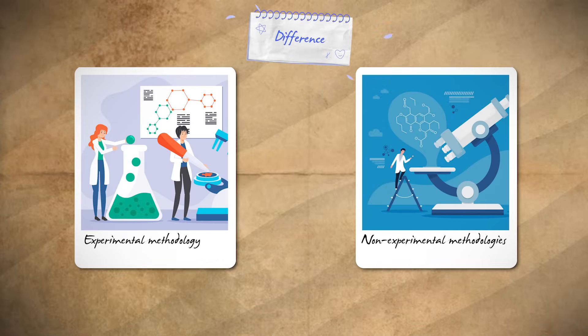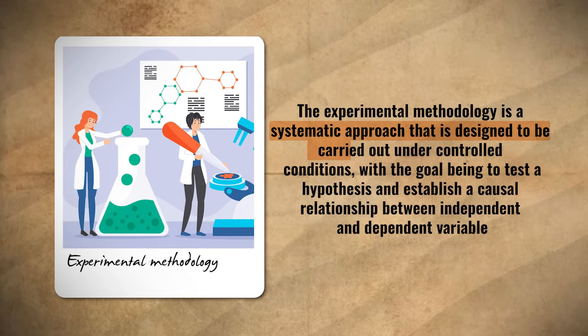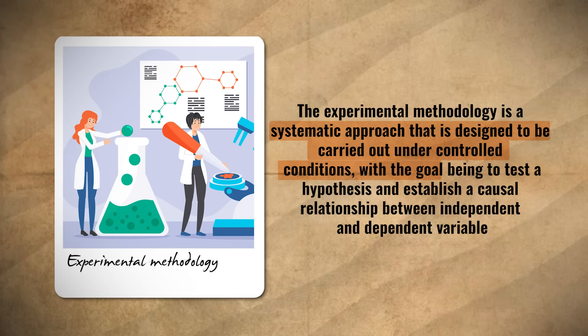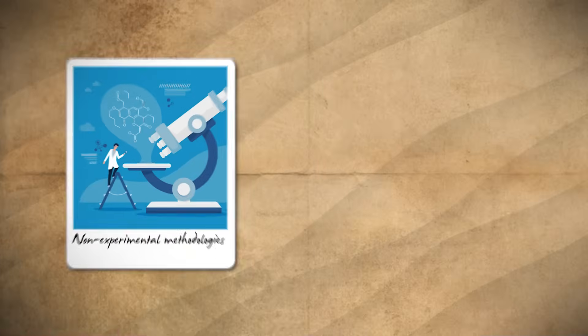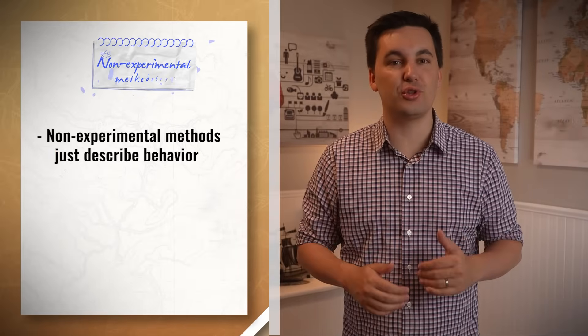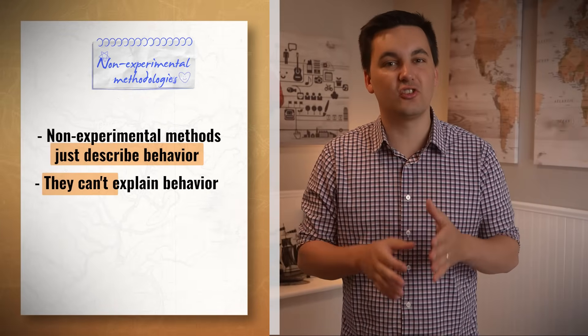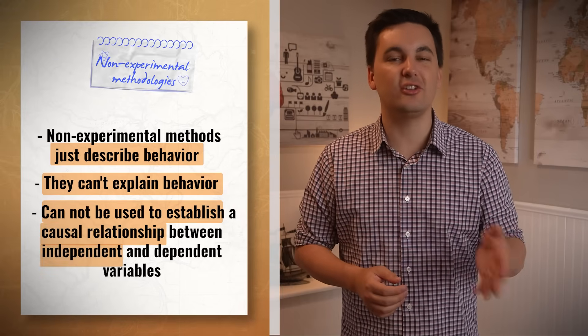We have to explain the difference between the experimental methodology and non-experimental methodologies. The experimental methodology is a systematic approach designed to be carried out under controlled conditions, with the goal of testing a hypothesis and establishing a causal relationship between the independent and dependent variables. Non-experimental methodologies are used where a controlled experiment is not possible or ethical — they describe behaviors but cannot explain them or establish causal relationships.